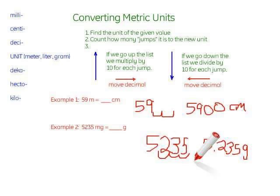And remember if we're multiplying we're moving our decimal to the right. If we're dividing we're moving our decimal to the left. However many spots the number of jumps is, and we've got our new answer. That's converting metric units. Hopefully that makes sense. And we'll go from there.